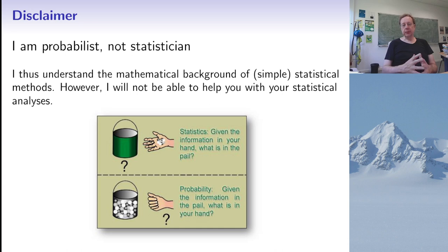So what is the difference between a probabilist and a statistician? Well this cartoon sums it up pretty nicely. Assume you have a pail containing beads in different colors and you grab a certain number. A probabilist will ask: given what is in the pail, what are the probabilities of different outcomes? While a statistician will ask: given what you find in your hand, what can you say on the contents of the pail?